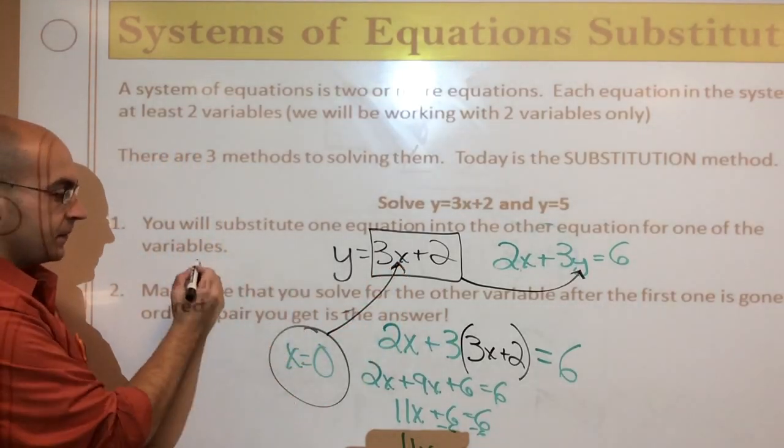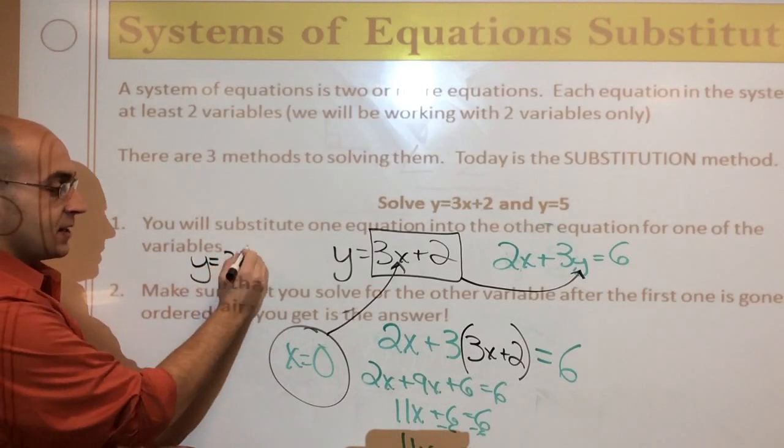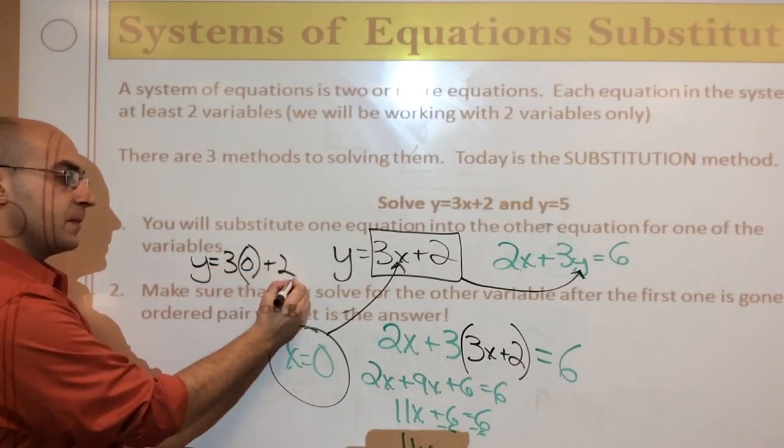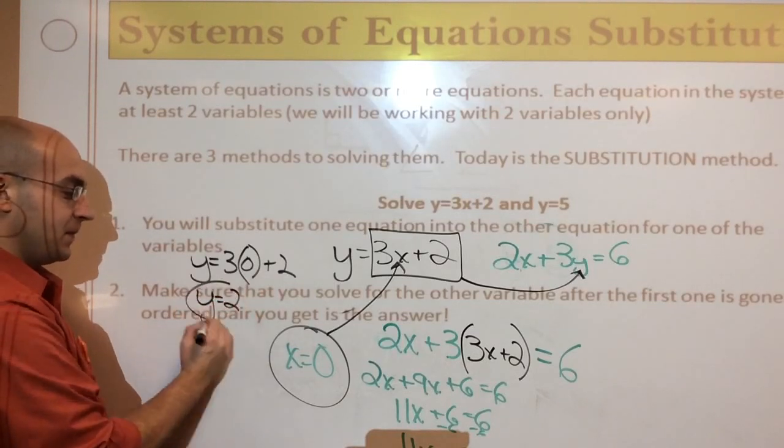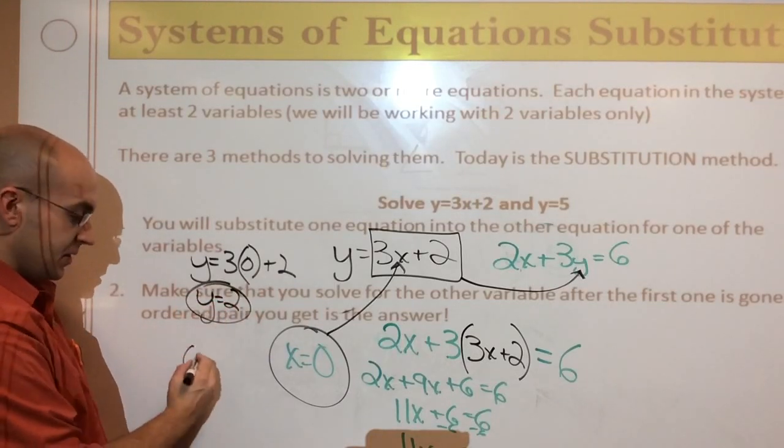Now, I've got this equation which I'm going to rewrite. So, it says y equals 3 times the quantity of 0 plus 2. So, I'm glad this worked out really nicely. So, y is going to equal 2. Now, I've got my ordered pair. The answer is 0 comma 2.